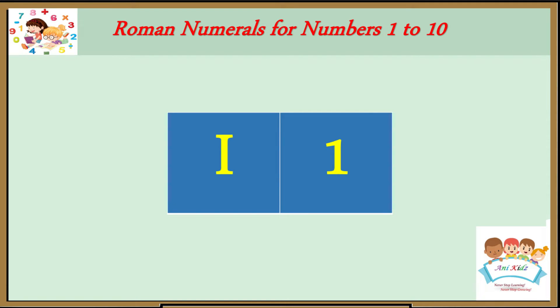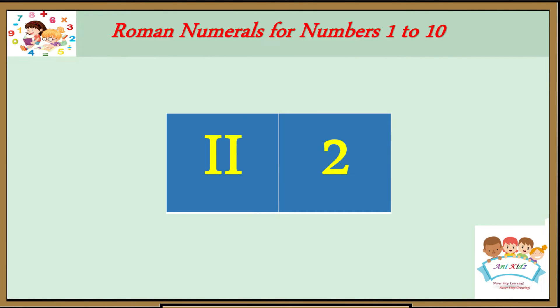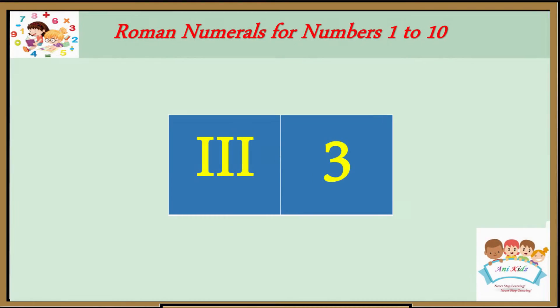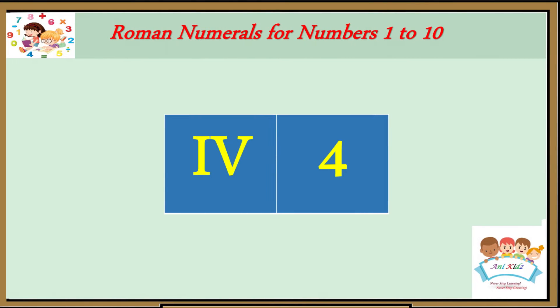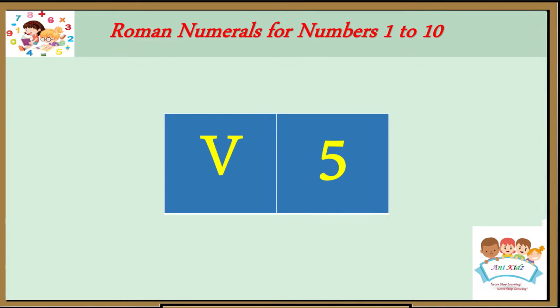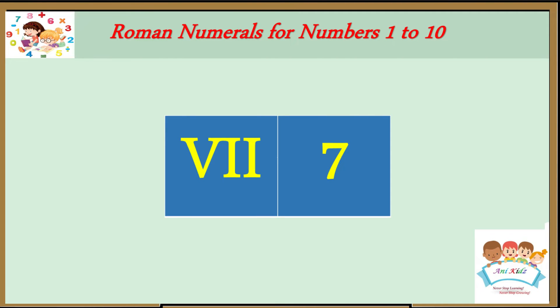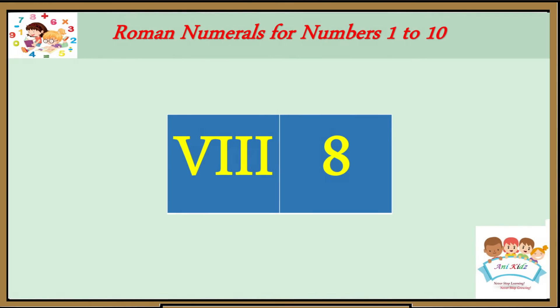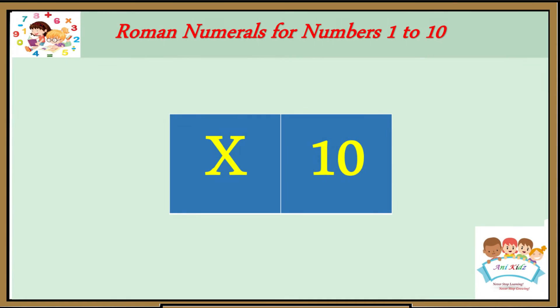1 is I. 2 is double I — II. 3 is triple I — III. 4 is I, V — IV. 5 is V. 6 is V, I — VI. 7 is V, I, I — VII. 8 is V, I, I, I — VIII. 9 is I, X — IX. At last, X is the number 10.